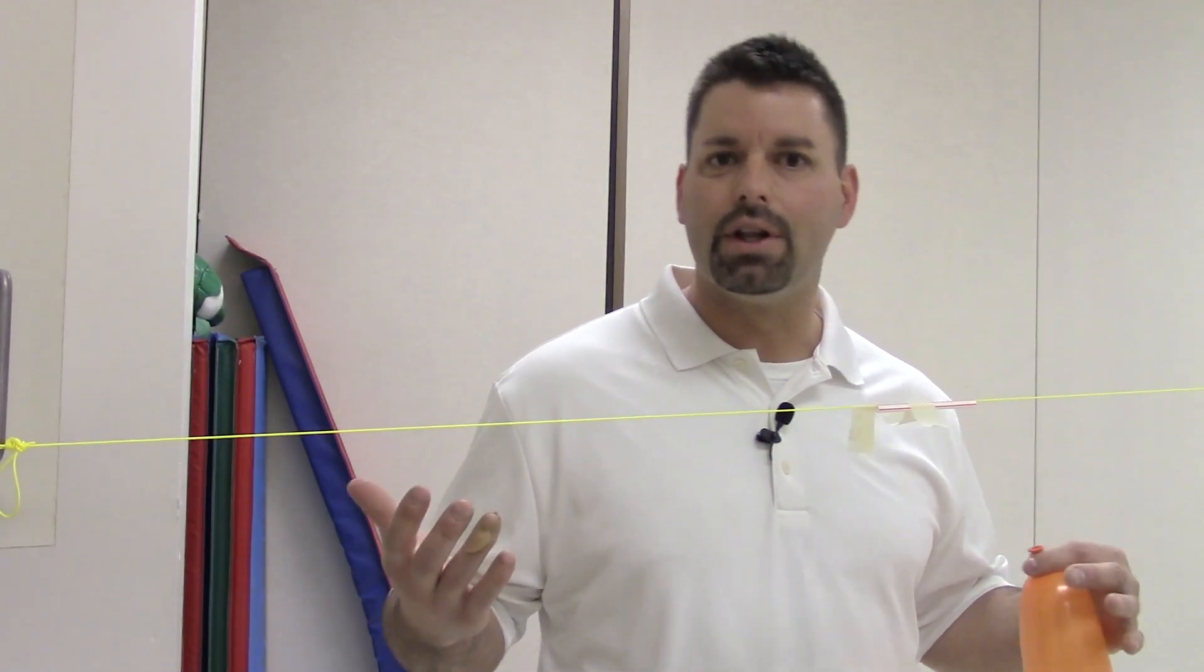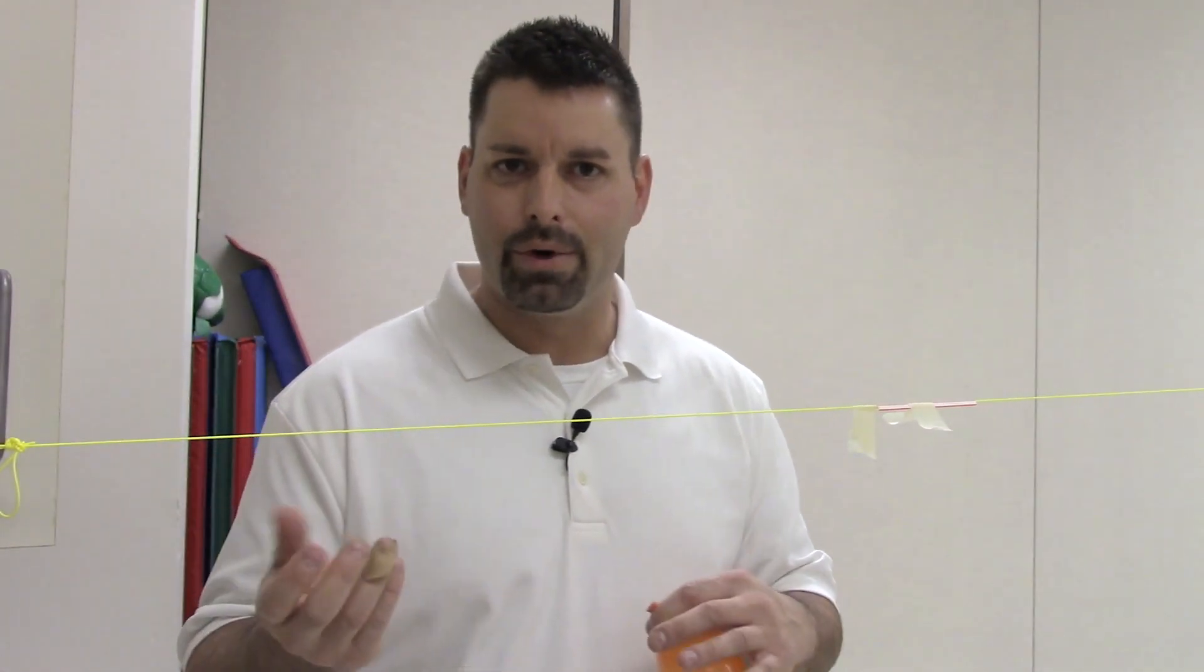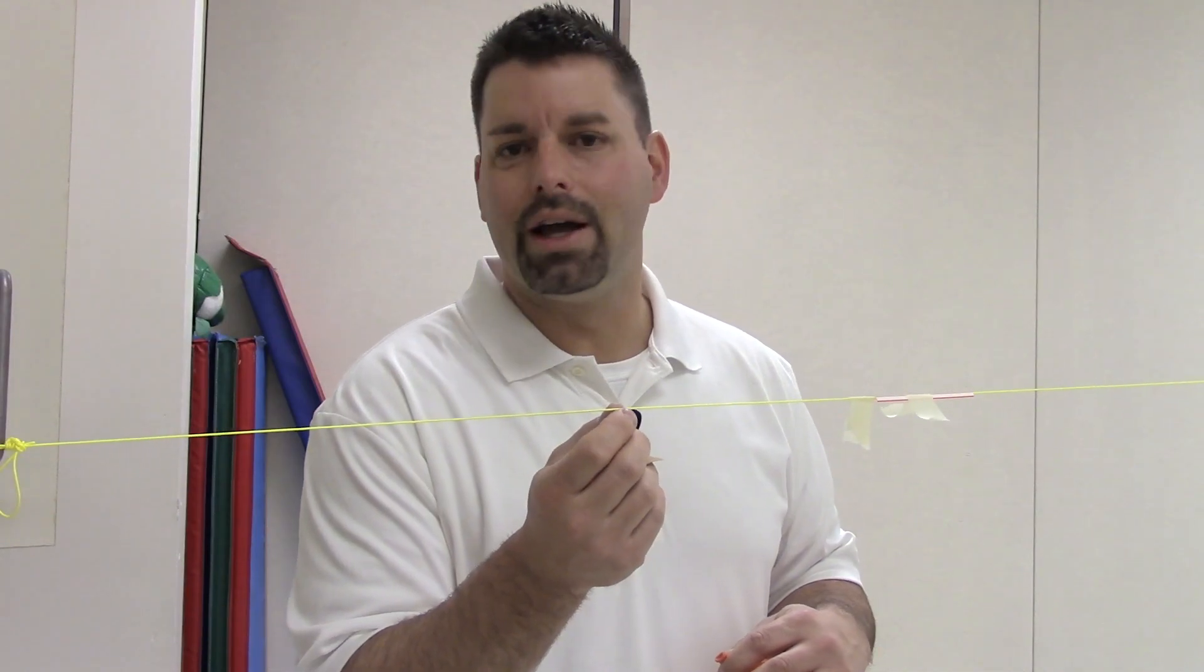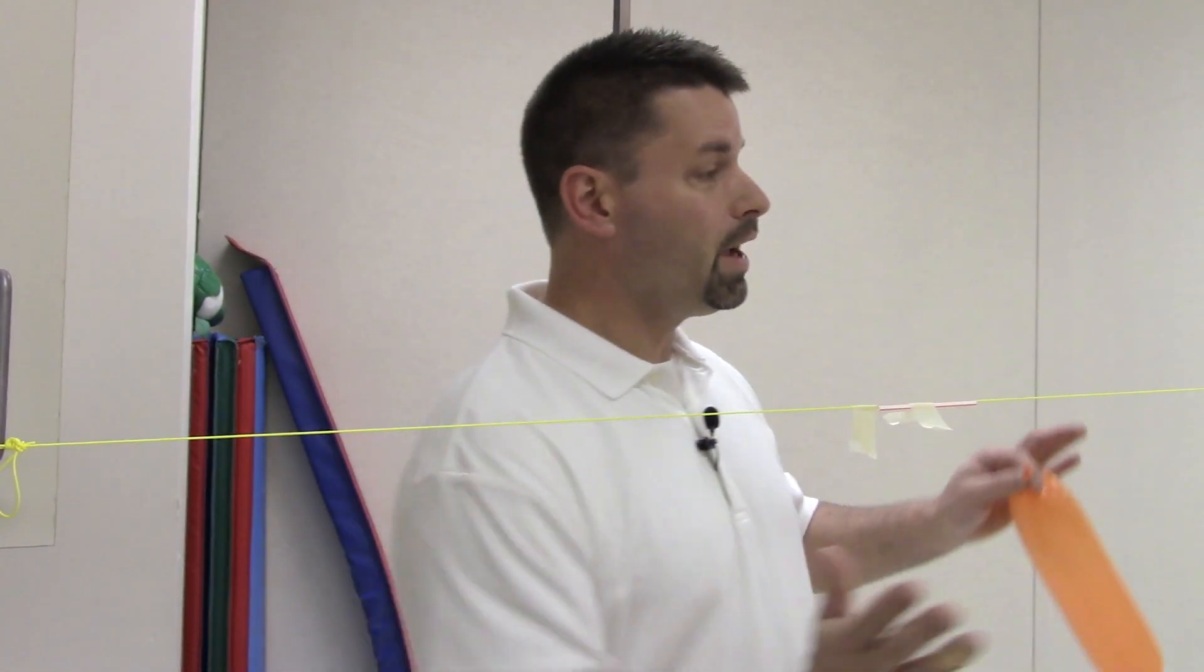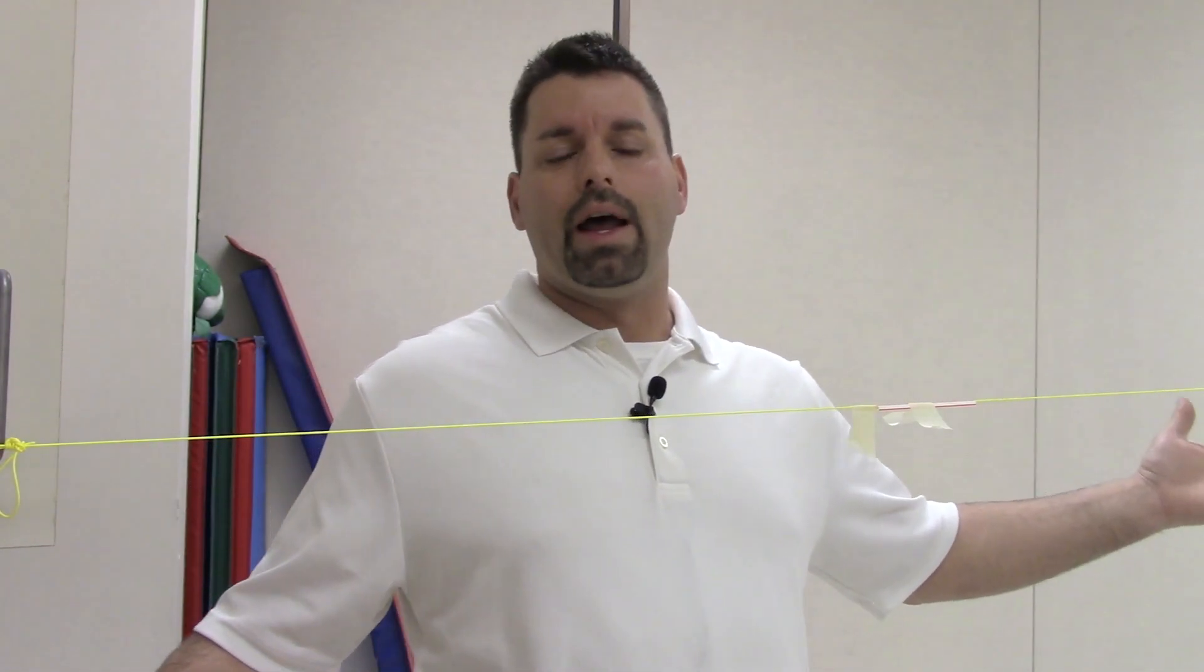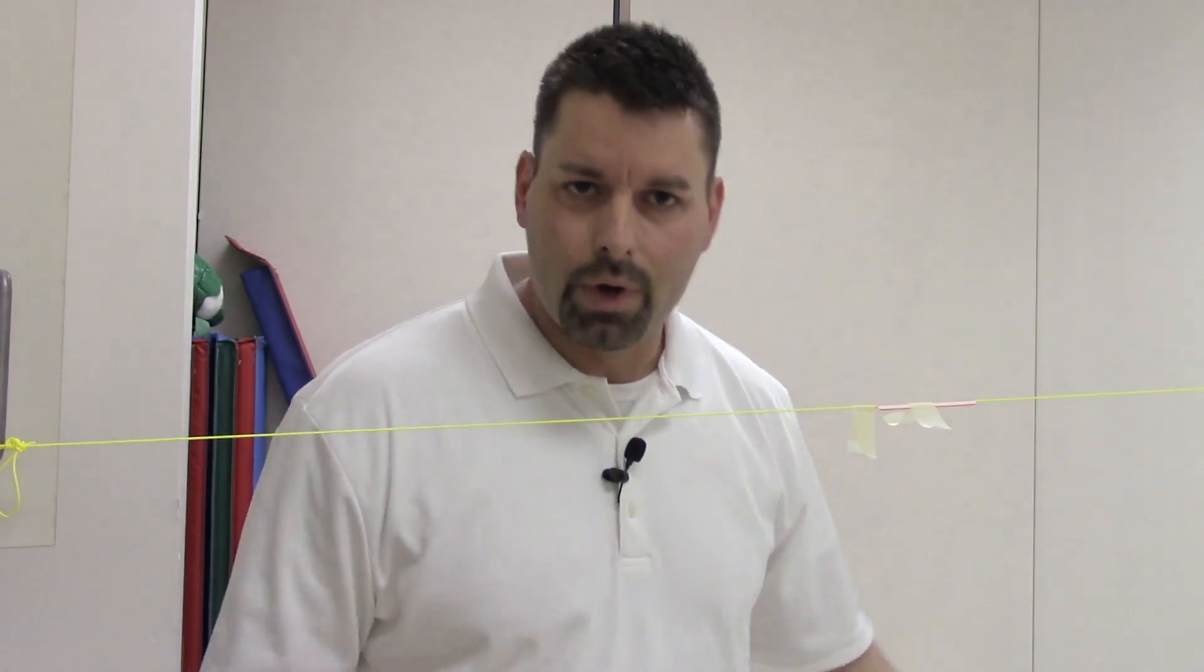Now here at Fun Science Demos we recommend using a clear fishing line but that makes it really hard for the camera to see so we use the special fly fishing line that's neon yellow and much easier to see. Now we stretch this line across our classroom. This classroom is about 25 feet or 8 meters long or wide. If we had a bigger classroom we could make it a longer run.